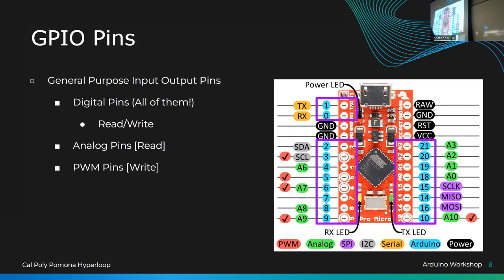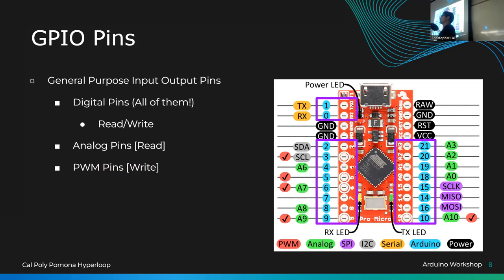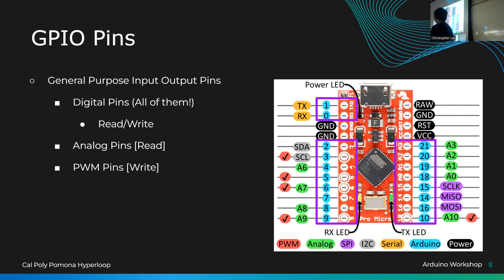PWM pins — Pulse Width Modulation — are like analog but for outputs. They're a write action. On the diagram, pins 3, 5, 6, 9, and 10 are locked as PWM pins. PWM fakes a lower voltage — since the Arduino can only output 5 volts, it oscillates to simulate something like 3.3 volts. PWM is useful for speed control, and when you work on your RC cars you'll use PWM to regulate motor speed. Some pins are both PWM and analog capable.